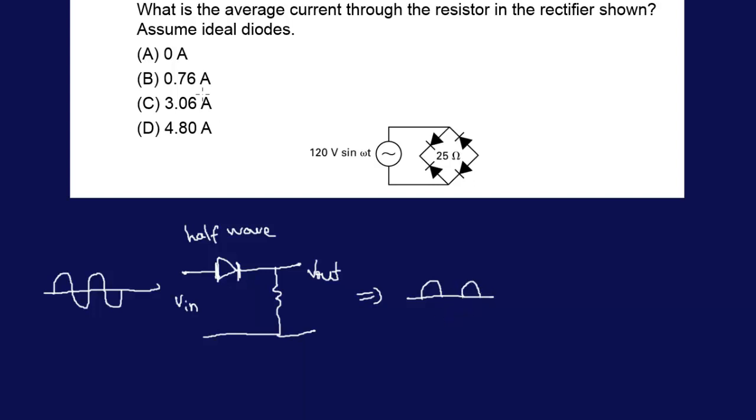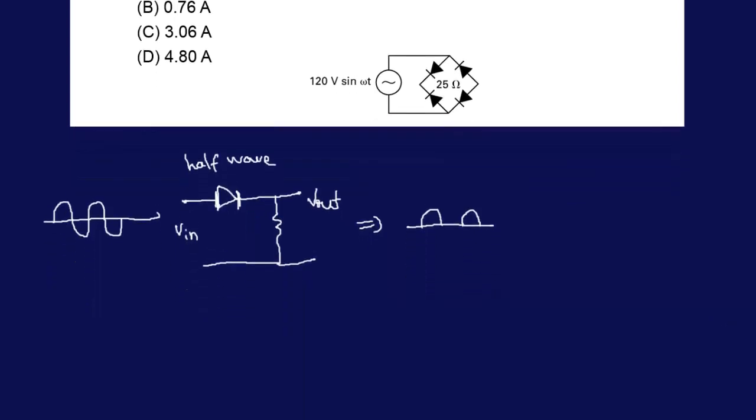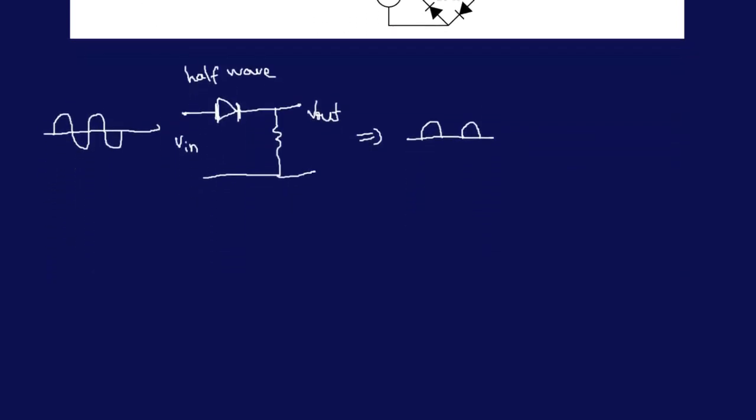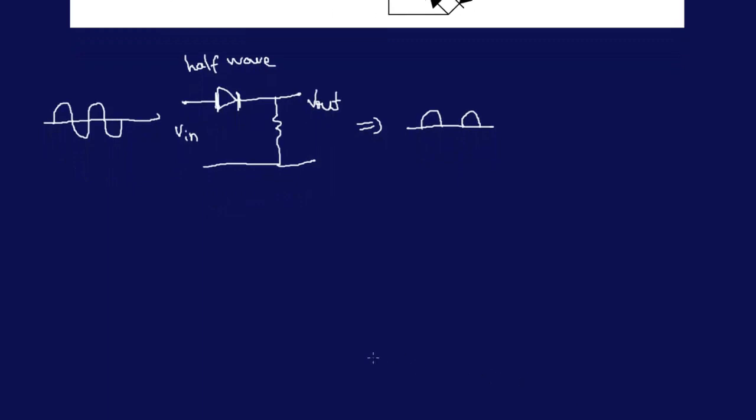On the other hand, if we have a full-wave rectifier, like what we're dealing with here, the current is always going in the same direction. Both full-wave and half-wave rectifiers are used in AC to DC converters, but the full-wave rectifier is more efficient.